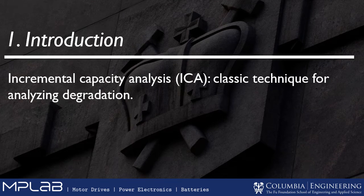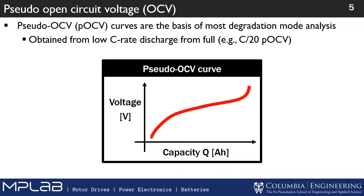ICA is a classic technique for analyzing degradation — it's been used for many years and its basic principles are pretty well known. It all starts from the pseudo-open circuit voltage, which is just a slow discharge from full. For example, you could take a C/20 C-rate, and you'd have a curve that looks something like the one here, where as the remaining capacity Q decreases, your voltage decreases — a non-linear relationship.